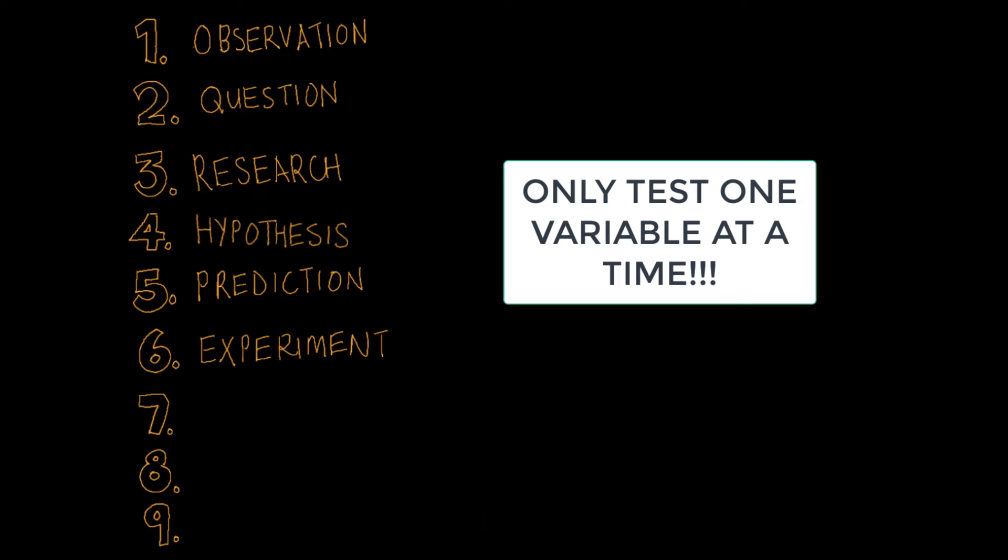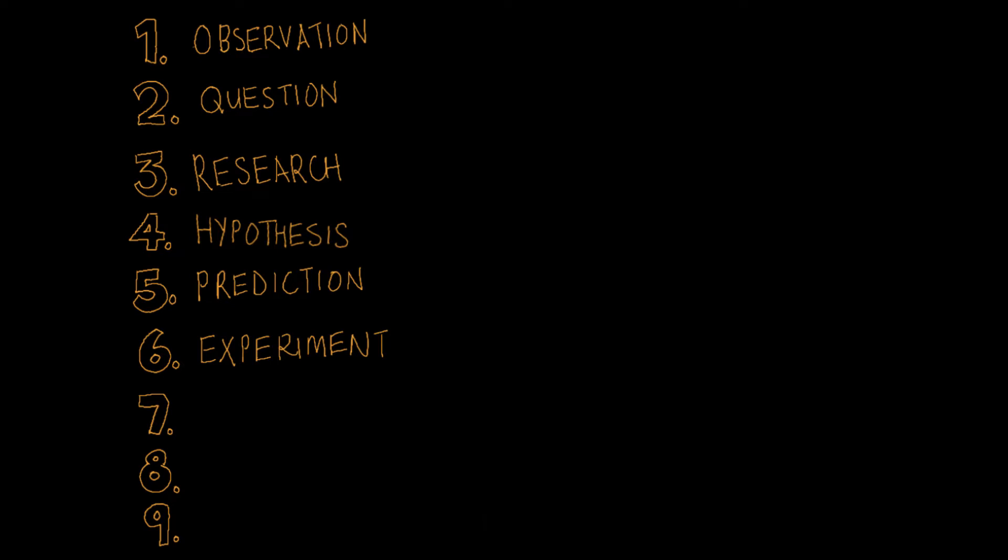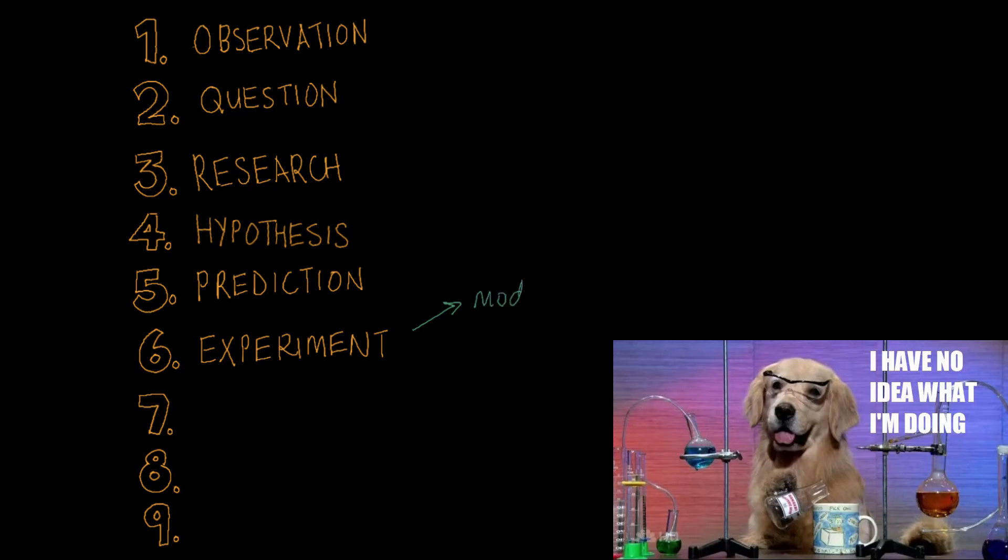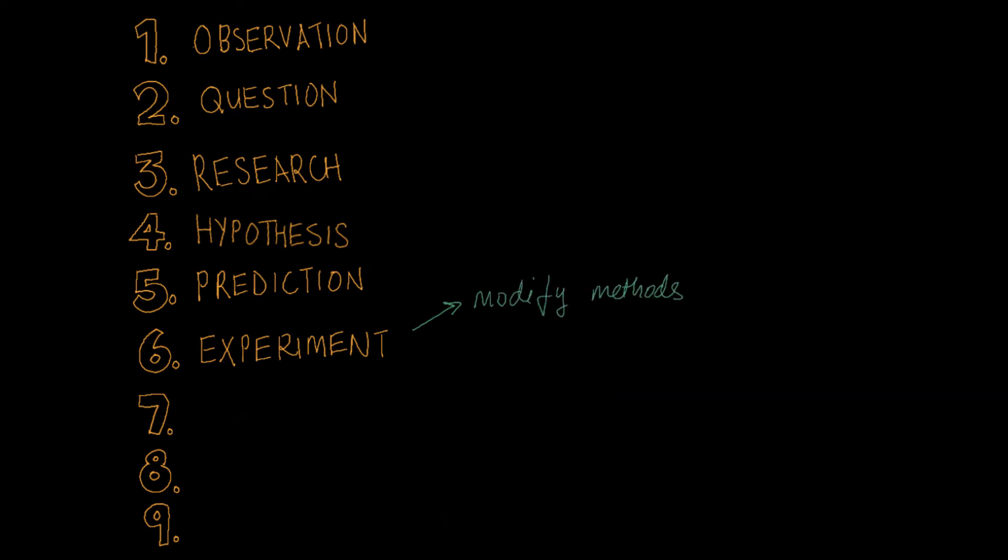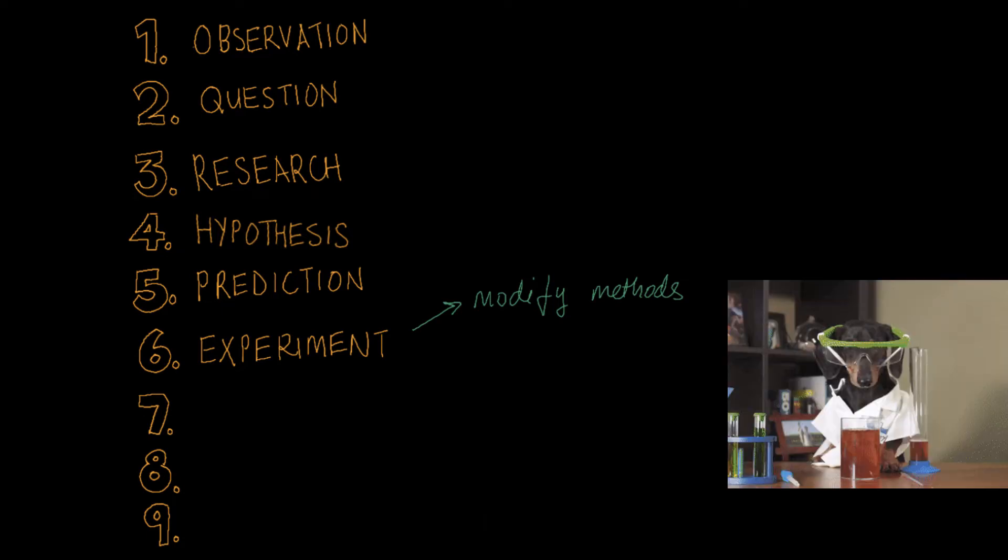You have to test only one variable at a time. That's one of the most important things in scientific experiments. At this point, you might find out that you actually need to modify your methods, and that's fine. Often, we find that our methods aren't actually going to lead to us collecting the data that we want to collect. So you might need to change your methods and go back and do your experiment again to make sure you get the data that you actually want.